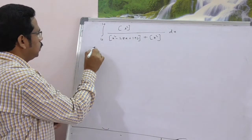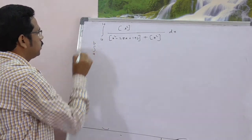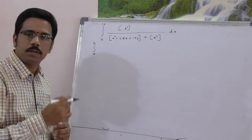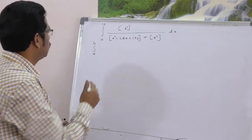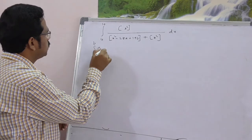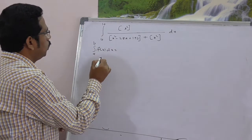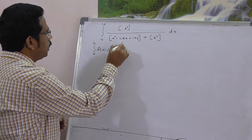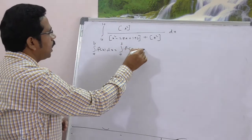Definite integral, we have to find this value. Just recall the basic or standard form. Definite integral is integral a to b f(x) dx is equal to integral a to b f(a + b - x) dx.